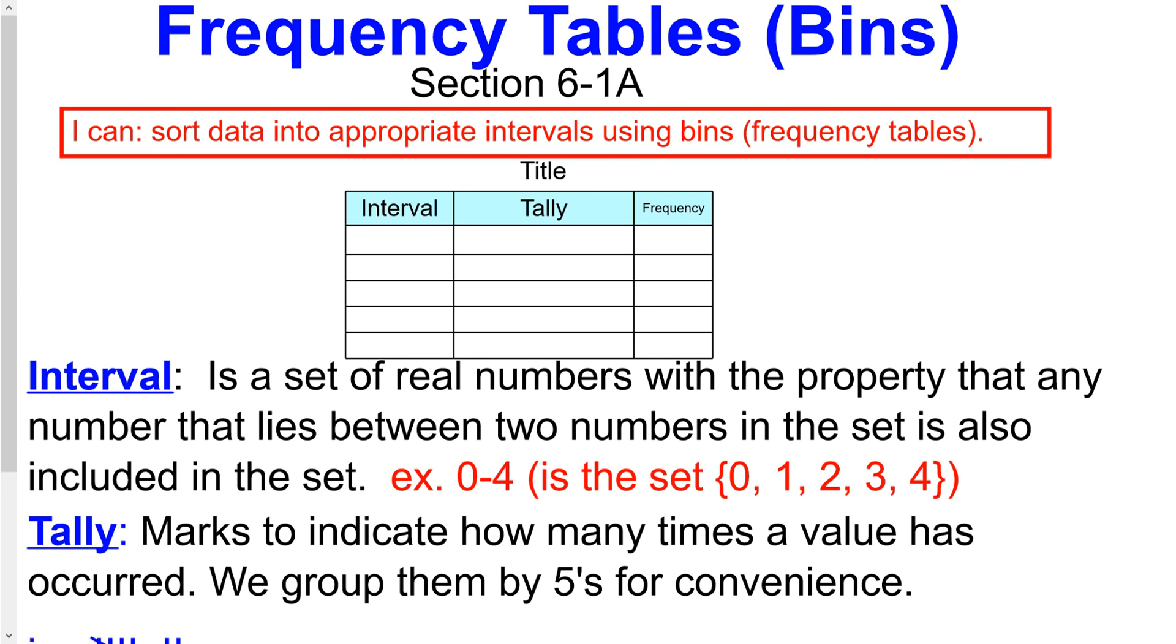So let me go through these things. The whole point of today is to sort data into appropriate intervals using bins. These are known as frequency tables or bins. A frequency table looks a lot like this. It has a title, it has intervals, it has tallies and the frequency. The tallies is really for us for counting.